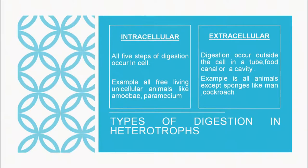Moving on to extracellular digestion — all multicellular animals show extracellular digestion. Here digestion occurs outside the cell in a tube-like structure, canal or cavity, like the alimentary canal — a tube open at two ends, the mouth and the anus. Some organisms like hydra show both types of digestion: they capture food with tentacles, digest it in a body cavity, and part of digestion also takes place inside the cells lining the cavity.